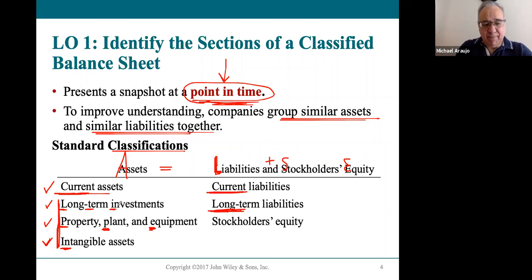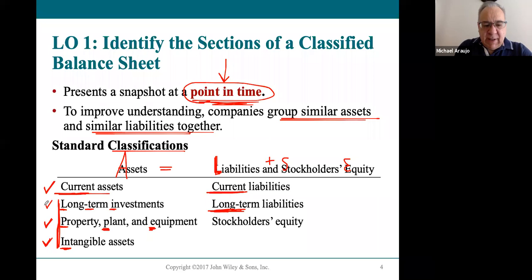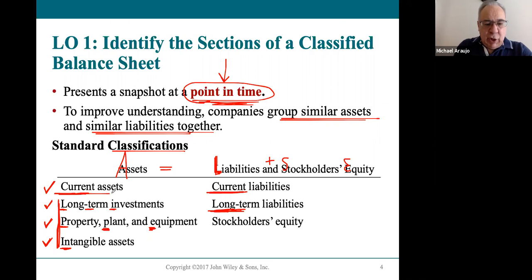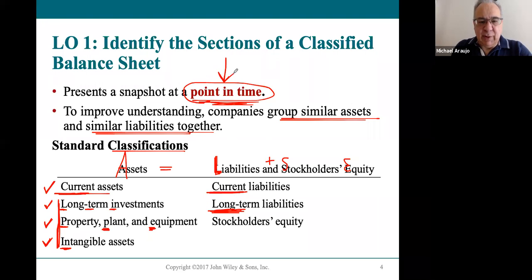So there are four classifications of assets. Current assets and property, plant, and equipment are going to be on every single balance sheet you ever see in your life. The third most common — becoming more and more important — is intangible assets. And then there are businesses that own other assets but aren't using them right now for selling products, so those are long-term investments. Liabilities, thankfully, is broken into just two parts: current liabilities and long-term liabilities.